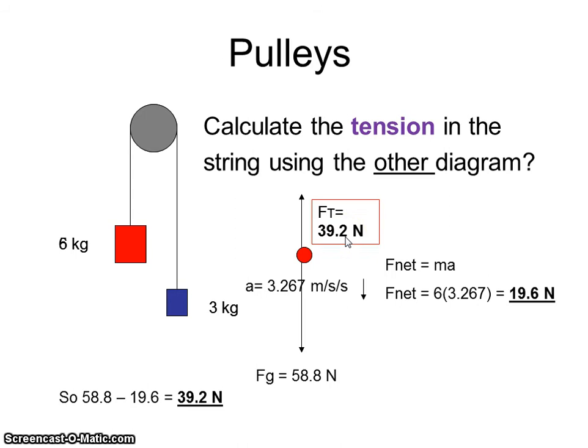Now, that happens to be the same number that we got over on this side. That should make sense. There's only one string, so it should make sense that the tension forces are the same on both sides of the pulley. When on this problem they ask you to calculate the tension, it doesn't matter which side you use. What does matter is which way it's accelerating because that helps you to figure out whether you're adding or subtracting those net forces.